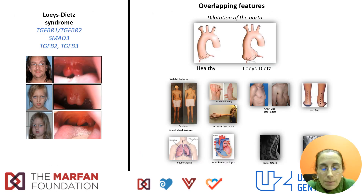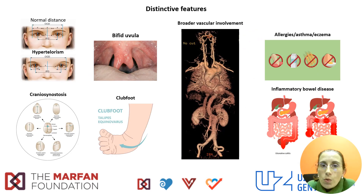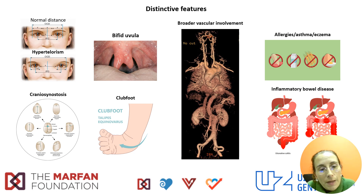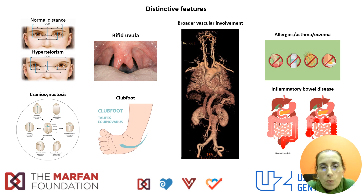Patients with Loeys-Dietz syndrome may share some phenotypic features with Marfan syndrome, including overlapping skeletal and non-skeletal features. Nevertheless, they can also present with specific features that make them phenotypically distinct. These include hypertelorism — a greater distance between the eyes — bifid uvula as shown in the picture, craniosynostosis in young children leading to different skull shapes, and club foot. Very typically, patients with Loeys-Dietz syndrome have broader vascular involvement, with aneurysm and dissection outside the thoracic aorta, and may present with extensive arterial tortuosity.